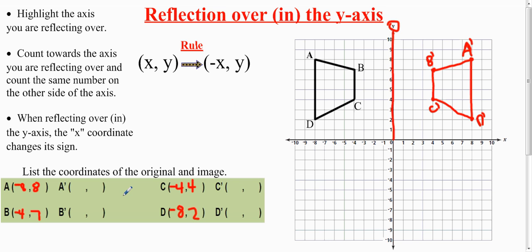Now I'm going to list the coordinates of the image. A prime is 8 to the right and 8 up, so that is (8, 8). B prime is 4 to the right and 7 up. That's all positive because these points are in the first quadrant, so everything's positive. C prime is (4, 4).